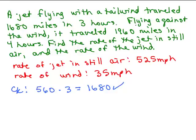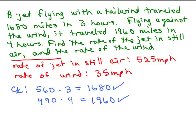Now we check the second part. Flying against the wind, it traveled 1,960 miles. Against the wind, the jet goes 525 minus 35, which is 490 miles per hour. Going for 4 hours: 490 times 4 equals 1,960. Looking back at the problem, it was 1,960, so this does make sense and confirms our answer.